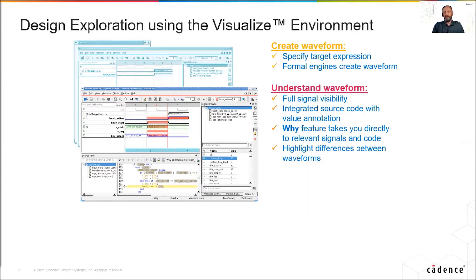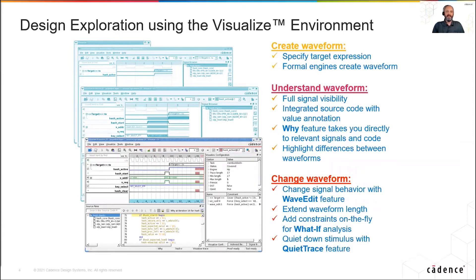Y-Analysis automatically plots relevant signals causing a particular signal to transition in a specific cycle, and you have the ability to highlight differences between two waveforms. The designer can change the signal behavior in the waveform using WaveEdit. The waveform length can be extended to see what happens in the future. Constraints can be added on the fly, and quiet trace capability allows the designer to minimize unnecessary signal transitions to make debug easier.